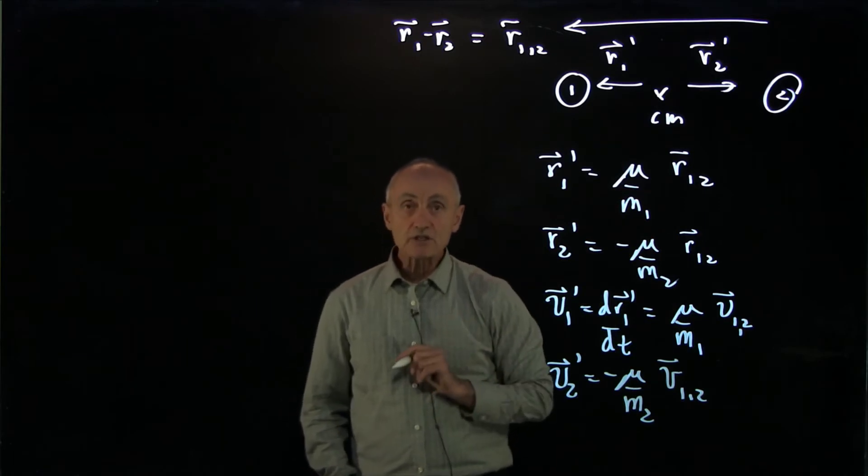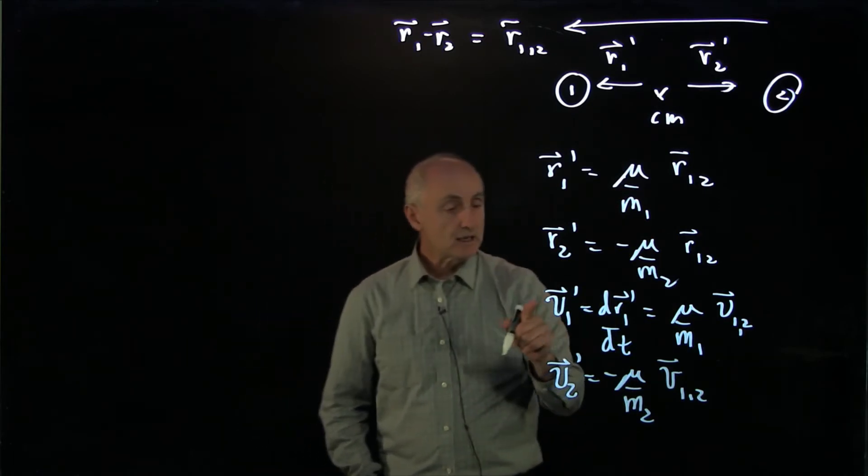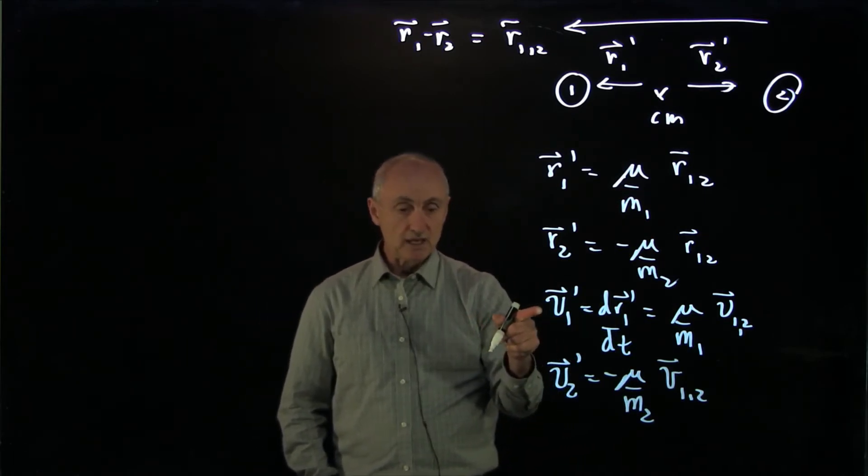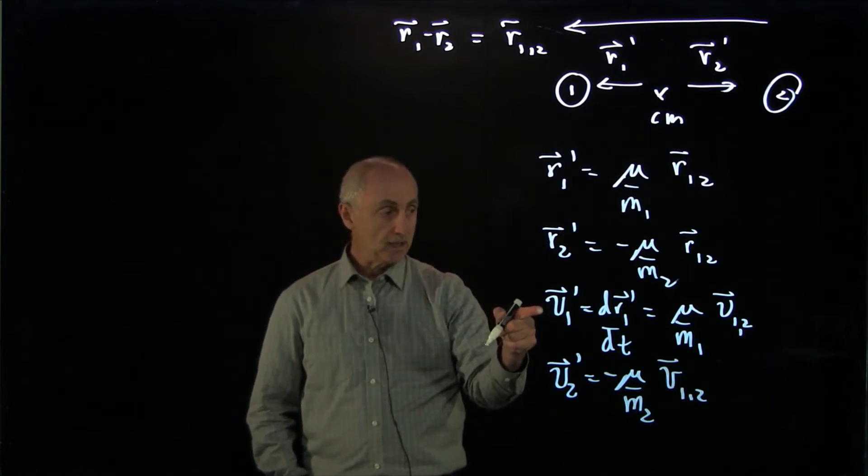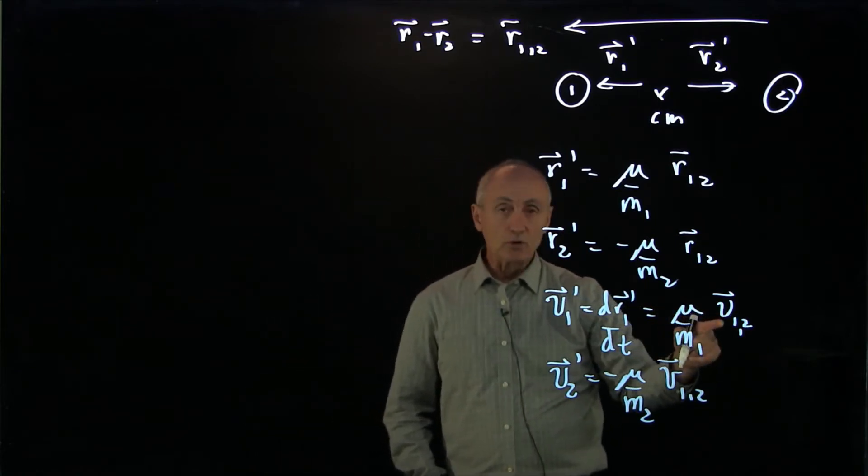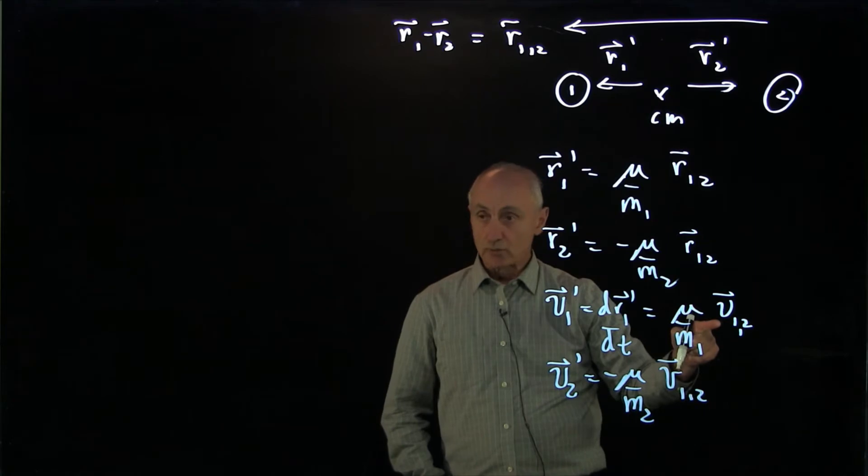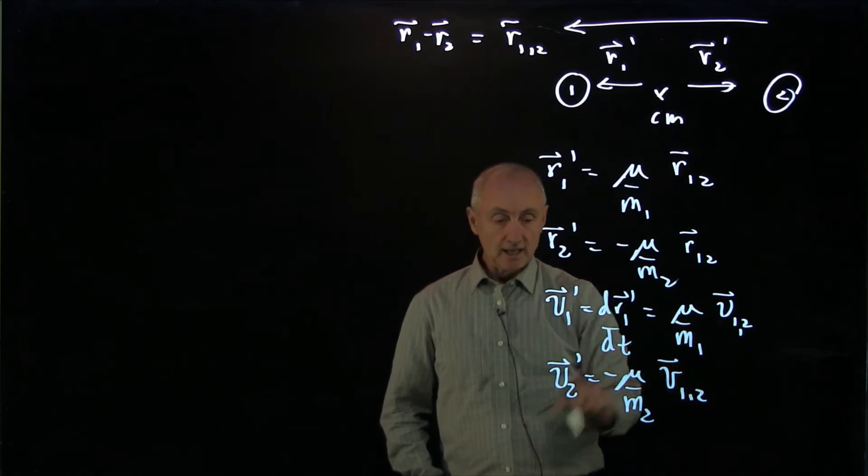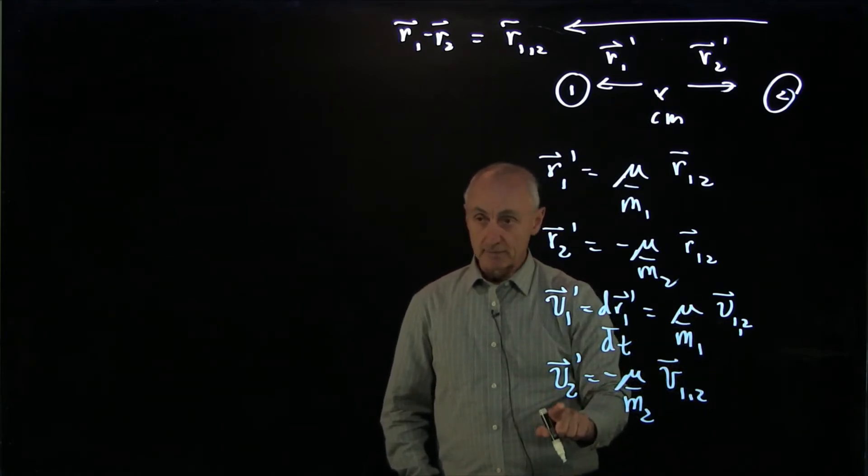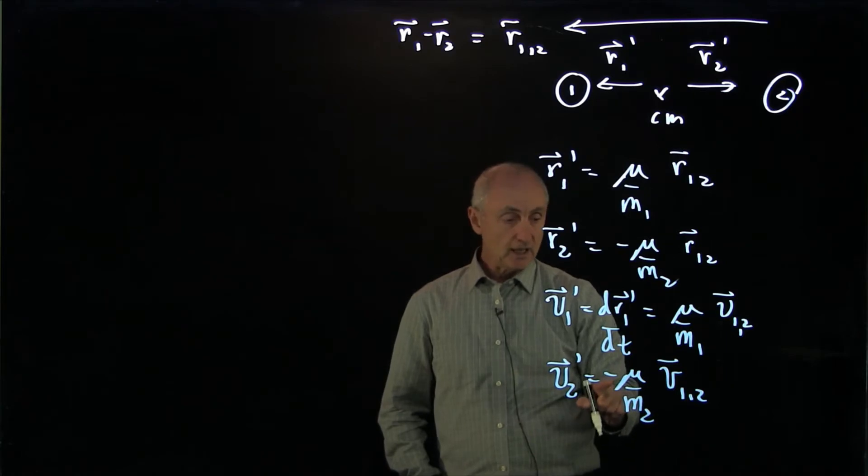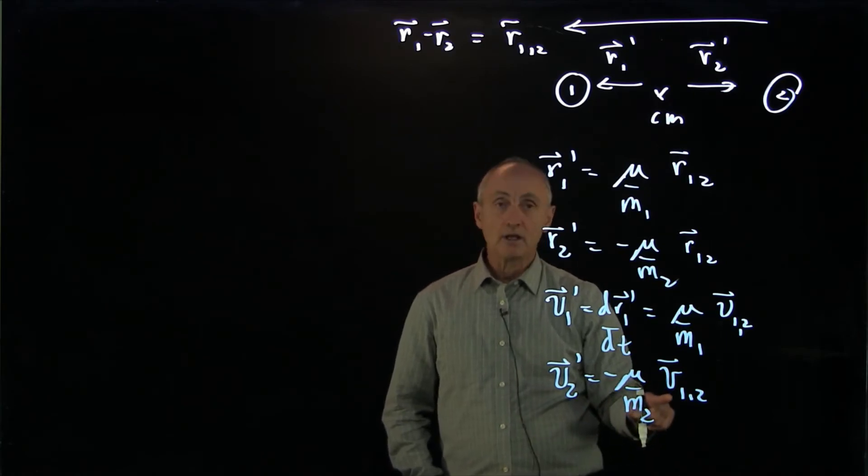Now, the significance of this result is that the velocity of the object in the center of mass frame is equal to some constant times the relative velocity. Likewise, velocity v2 prime in the center of mass frame is also proportional to a constant, minus the relative velocity.